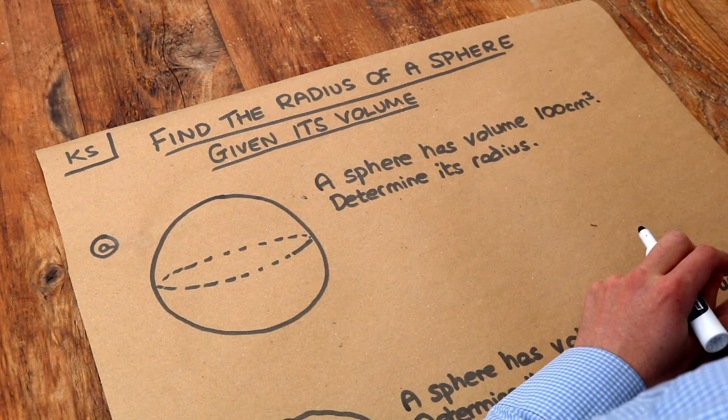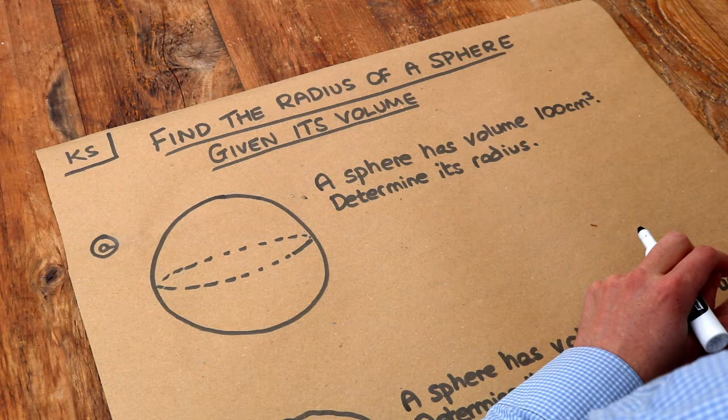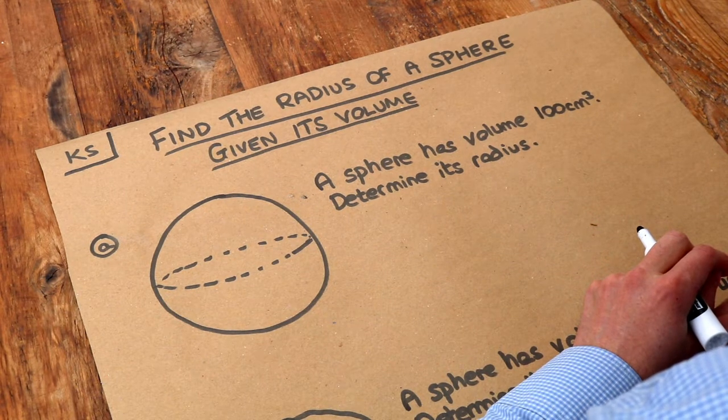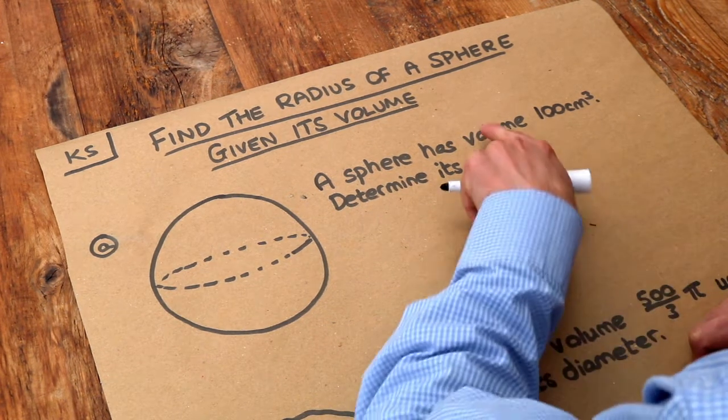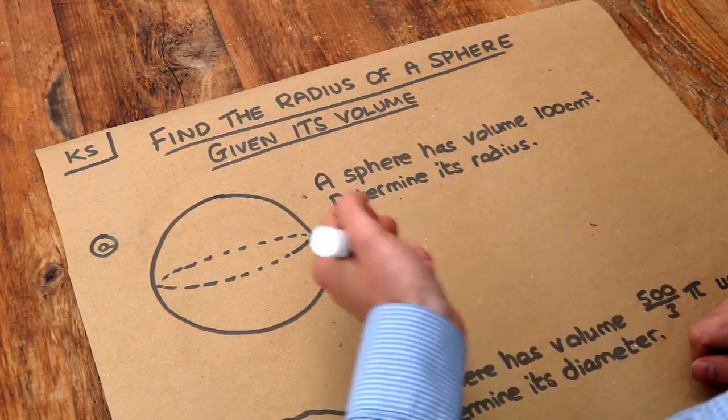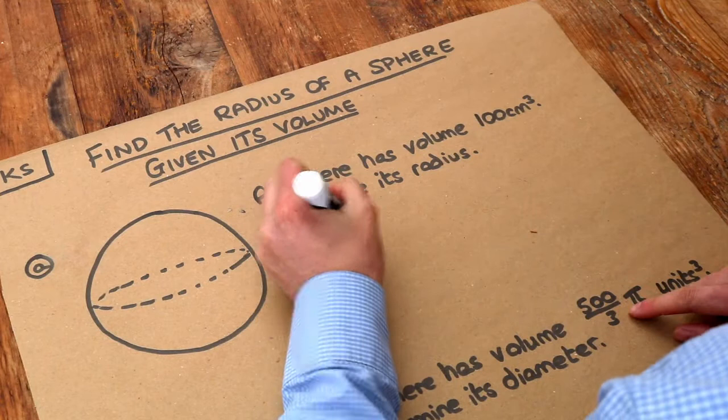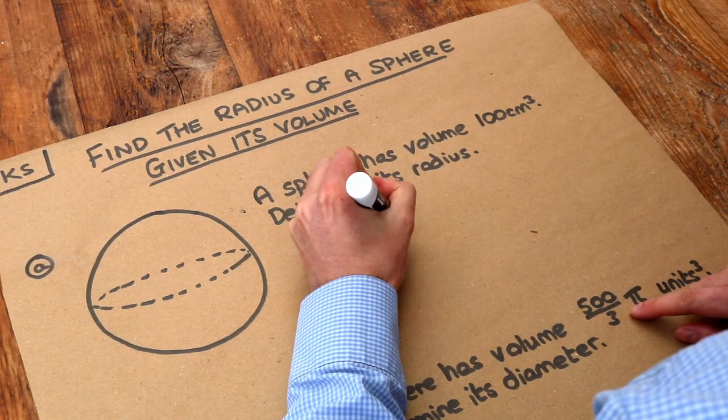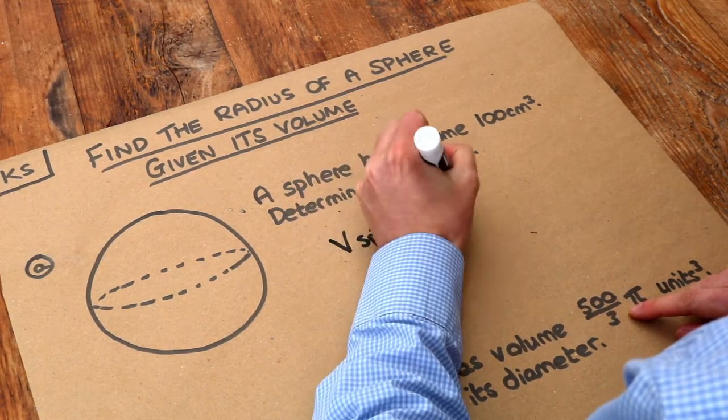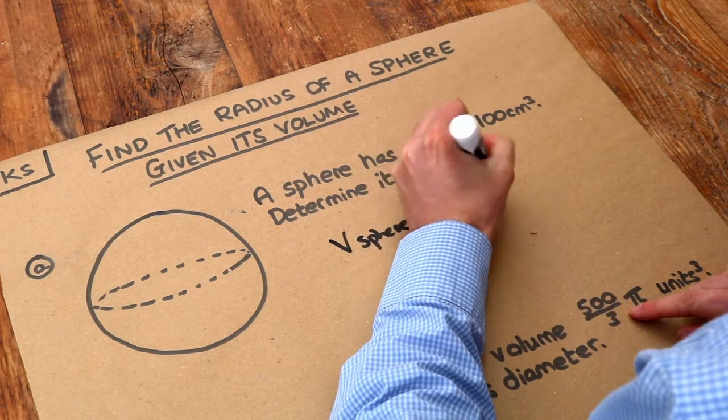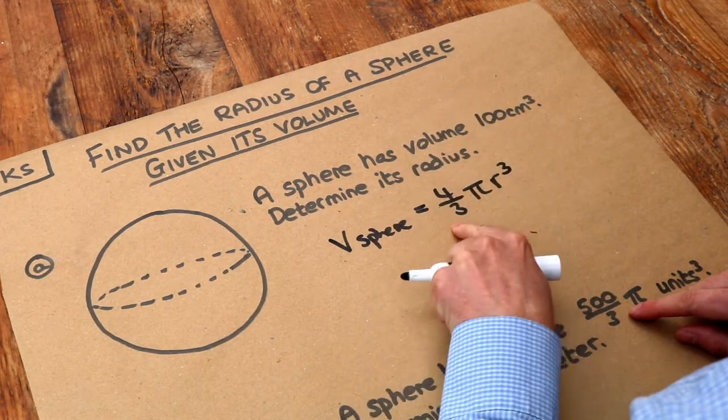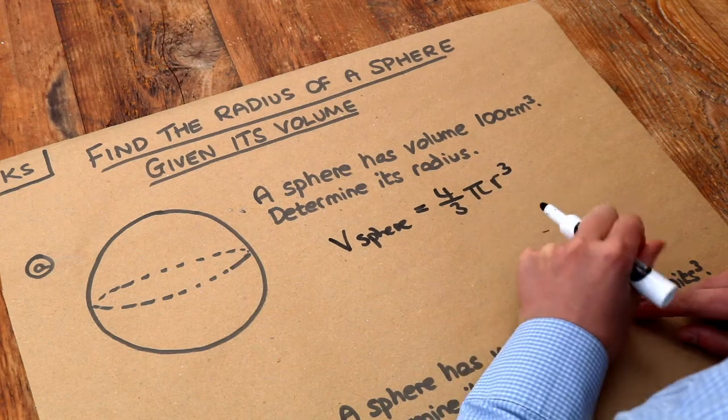So we've got this first problem here. We have a sphere with volume 100 centimeters cubed and we want to determine its radius. Now we're talking about the volume of a sphere here, and in the previous video we looked at what the volume of a sphere was. So it was this formula here. The volume of a sphere is equal to four thirds pi r cubed. So that means four thirds times pi times the radius cubed.